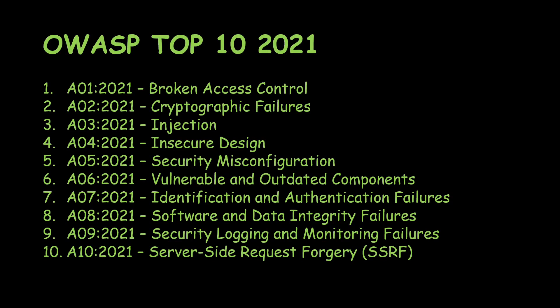Hello everyone, this is Mitter and Nuts. Hope you guys are doing well. Today we'll be continuing the OWASP Top 10 2021 video series, looking at the seventh risk, that is identification and authentication failures. The previous six I've covered in the previous videos, you can go and check that out.